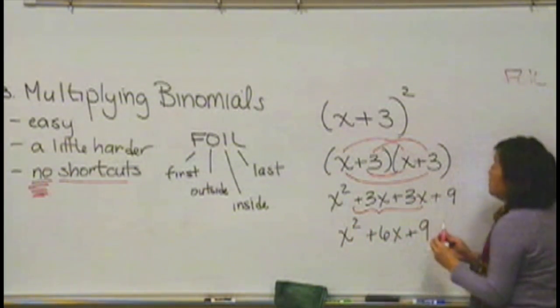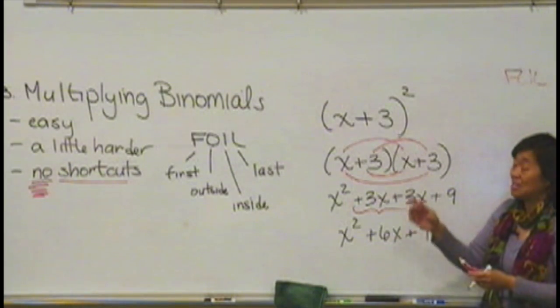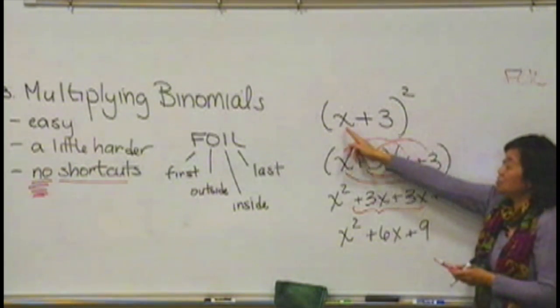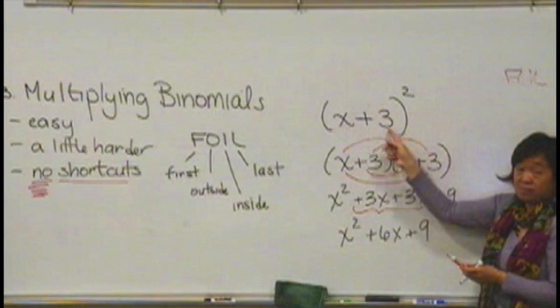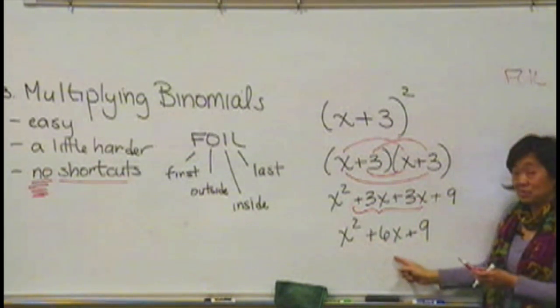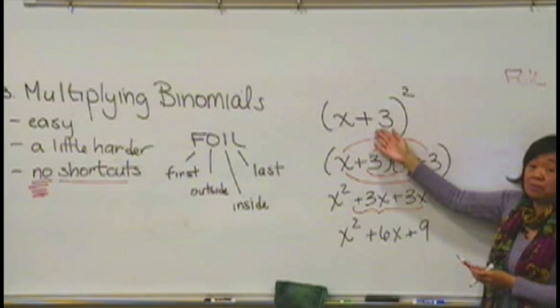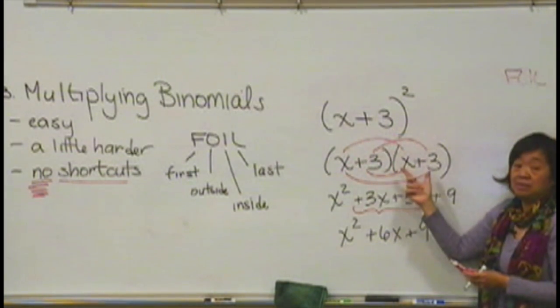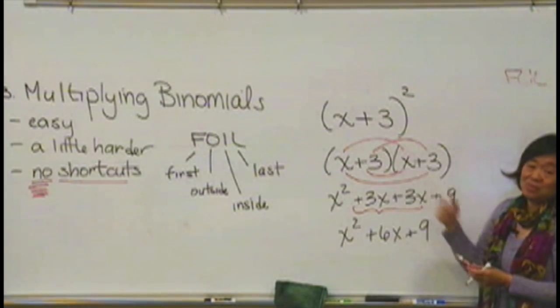So, hopefully, you can see that if you were to accidentally take the tempting but wrong shortcut of just squaring x and squaring 3, you would be missing this middle term here. So, when you see one like this, I really recommend just write it out, and then apply FOIL like you always would.